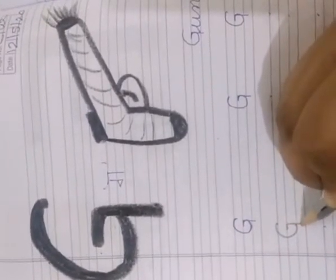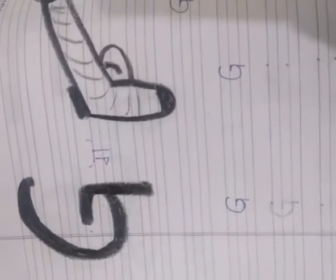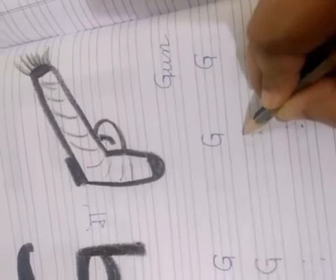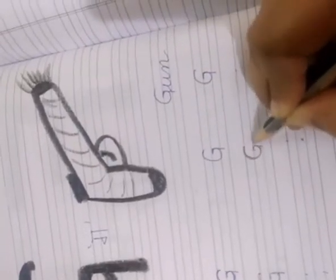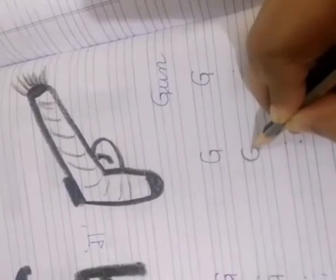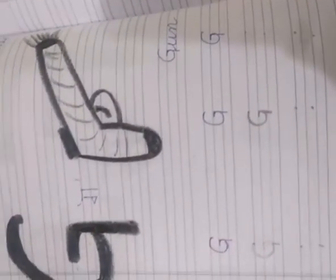How to write letter G? Yes. Standing line bananin hai. Yeh ban gaya aapka letter G. Ek baar fir aap dhekhiye student. Sab se pahle aapko bananai hai letter C. C ke saath hi aapko bananin hai sleeping line. Or, uuske saath hi aapko bananin hai one standing line. Yeh ban gaya aapka letter G.